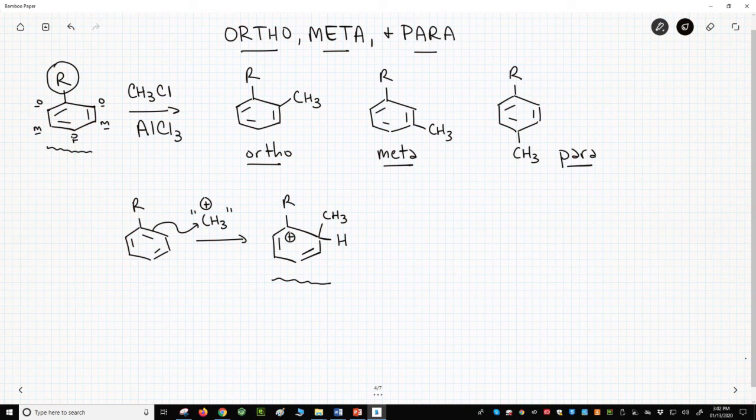Here's where the R group becomes important. We'll see that the size of the R group can play a role in the reaction. This is a steric effect. So how big the R group is may sterically repel substitution at the ortho carbon.